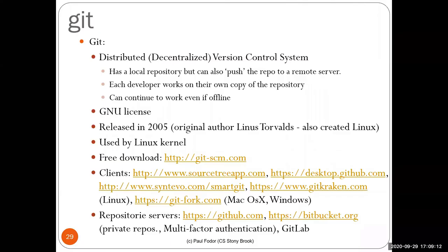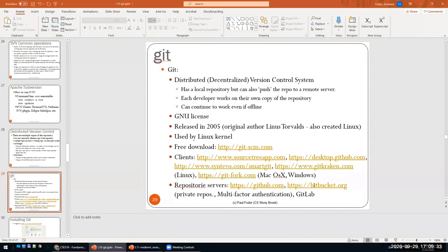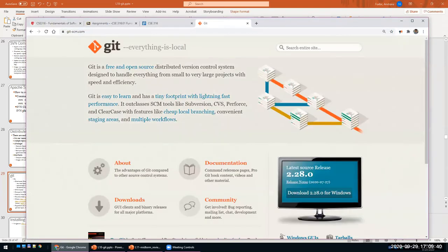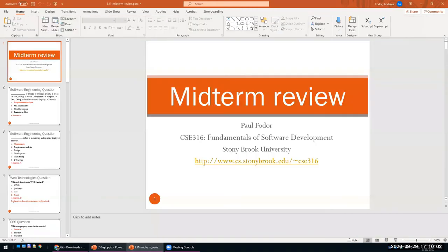The main system we use today is Git. It was released in 2005, originally authored by Linus Torvalds — who also created Linux — under the GNU license, and is used by the Linux kernel. You can download it from git-scm.com for Windows or Mac. It installs a bash shell and the git command, so you can run git from your local directory in CMD — push, pull, and so on.